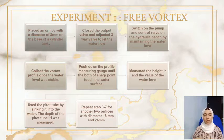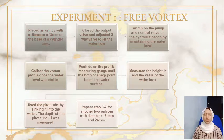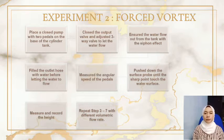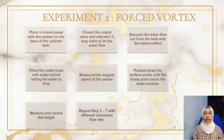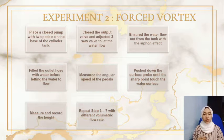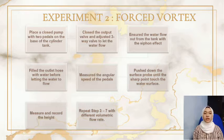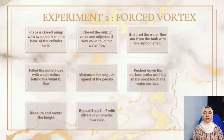Repeat steps 3 to 7 until stable for another two orifices with diameters of 16mm and 24mm. Experiment 2 is the forced vortex. The procedure: first, place a closed valve with 2 pedals on the base of the cylinder tank. Close the output valve and adjust the 3-way valve to let the water flow. Ensure the water flows out from the tank with the siphon effect by raising the hose to above the water level in the tank.